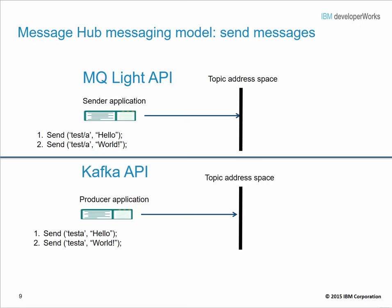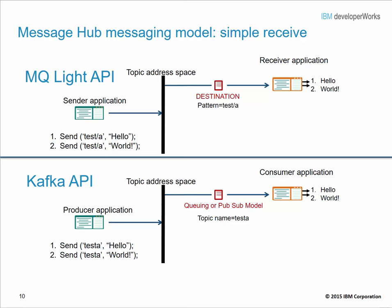Now let's look at MessageHub messaging models. When sending messages, both the MQ-Lite API and the Kafka API require you to indicate where the message is to be sent. In MQ-Lite, this is the destination name, which can be either a queue or a topic. In Kafka, regardless of whether you're using point-to-point or pub-sub, you always send to a topic. For receiving, the MQ-Lite API receiver points to the appropriate destination — either a queue or a topic — while in Kafka, the consumer application always points to a topic to receive messages.